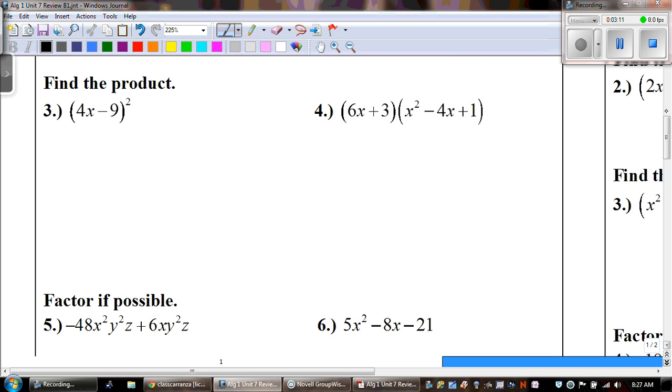Number 3 says to find the product. Now, I know that I cannot do that. The exponent tells me how many of the bases we have, which means we really have 4x minus 9 times 4x minus 9. And now, what we do is distribute. So, 4 times 4 is 16, and x times x gives us x squared.